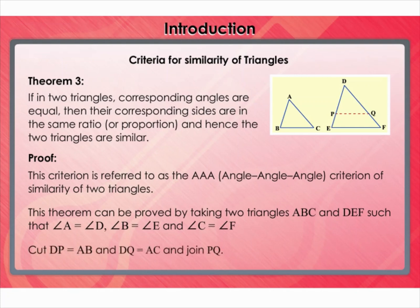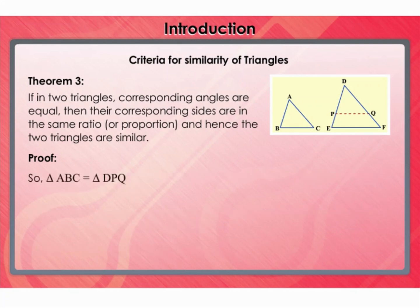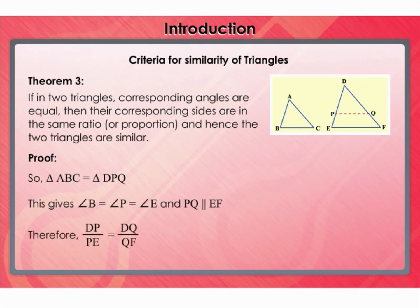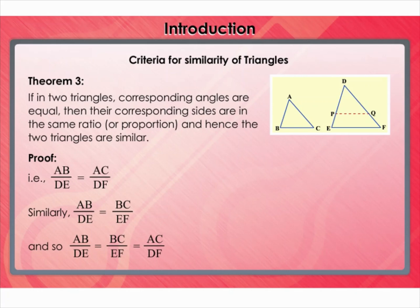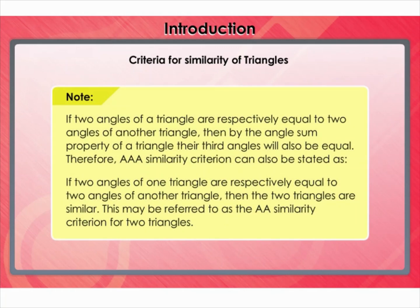Cut DP equal to AB and DQ equal to AC, and join PQ, so triangle ABC is congruent to triangle DPQ. This gives angle B equals angle P equals angle E, and PQ is parallel to EF. Therefore, DP/PE equals DQ/QF, that is, AB/DE equals AC/DF. Similarly, AB/DE equals BC/EF, and so AB/DE equals BC/EF equals AC/DF.